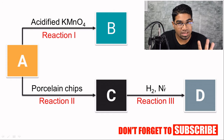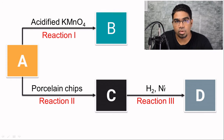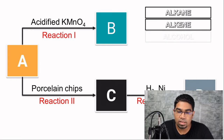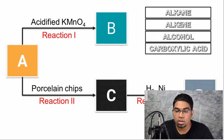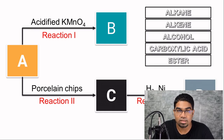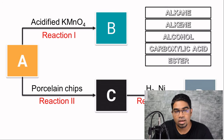Now let's study the five basic types of organic compounds. We have alkane, alkene, alcohol, carboxylic acid, and ester. These are the five basic organic compounds we'll be working with.